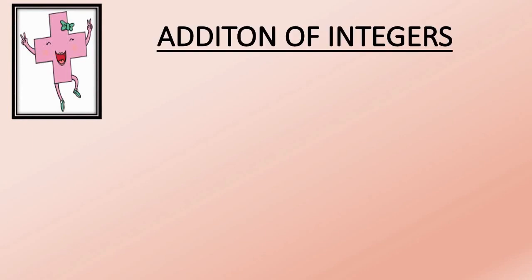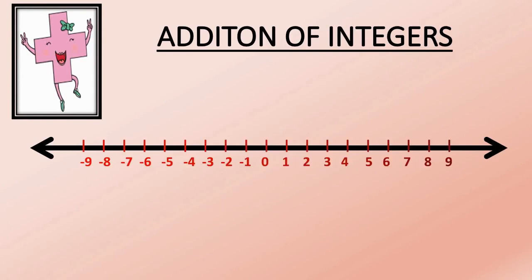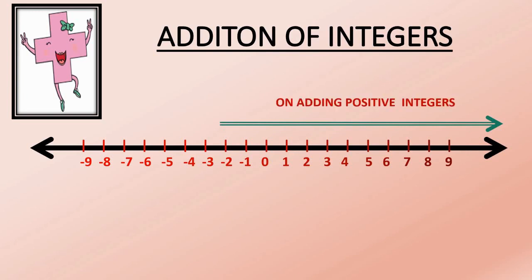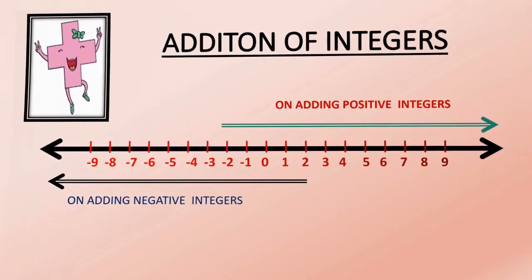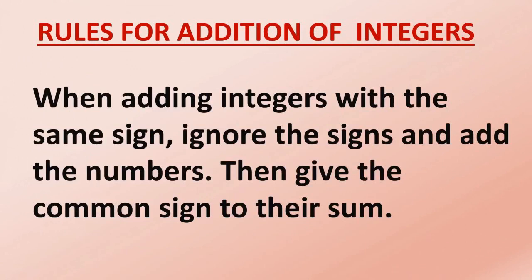Now we have completed Practice Set 4. We will start addition of integers. If we add a positive integer on a number line, you will move to the right side. If we add a negative integer, you will move to the left side. Rules for addition of integers: When adding integers with the same sign, ignore the sign and add the numbers, then give the common sign to their sum.